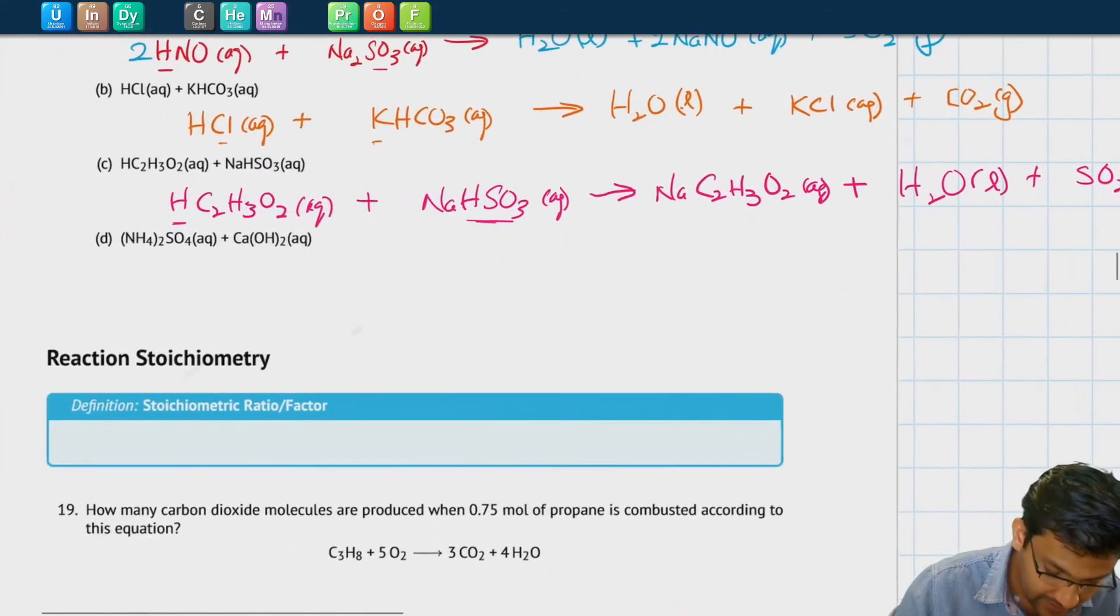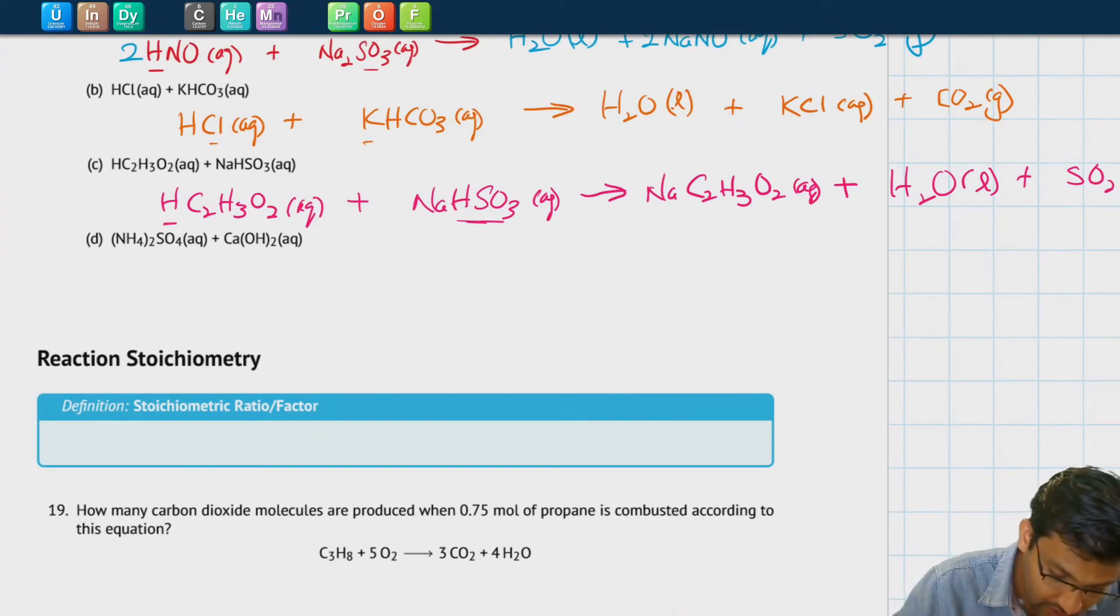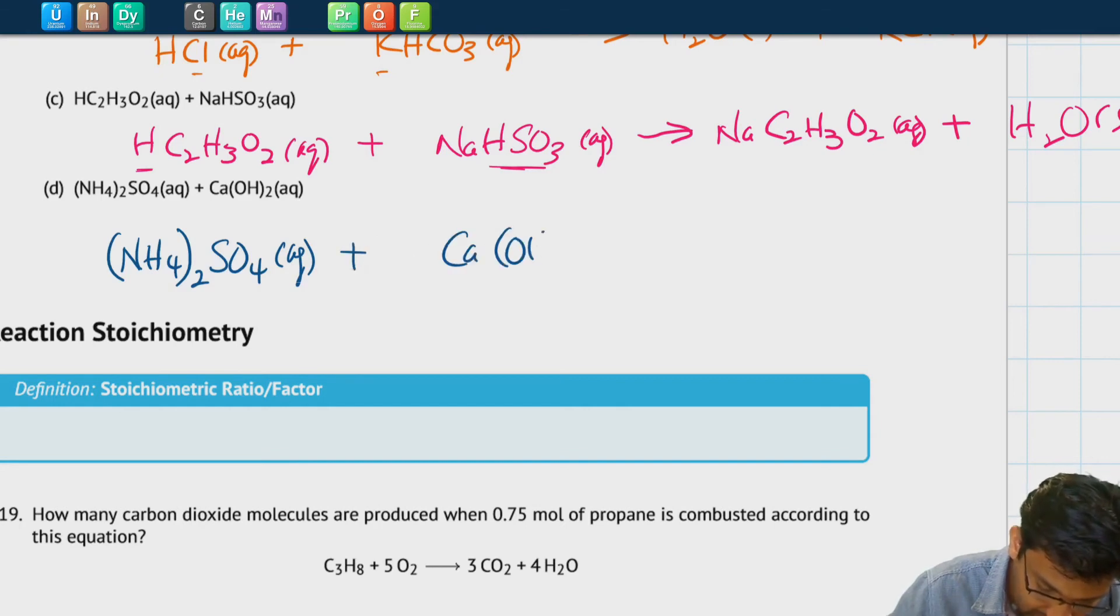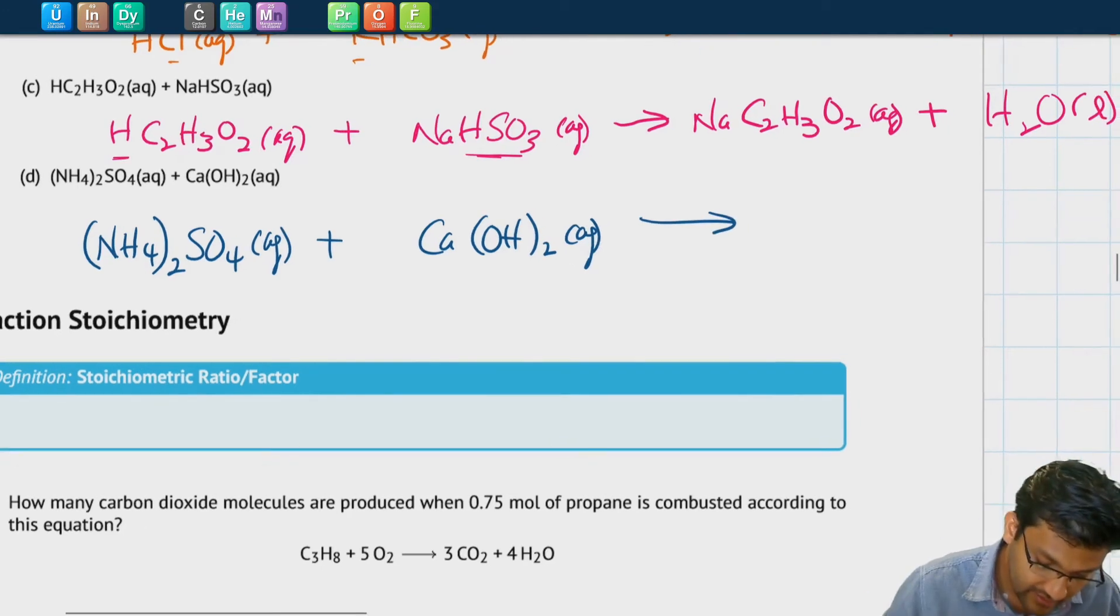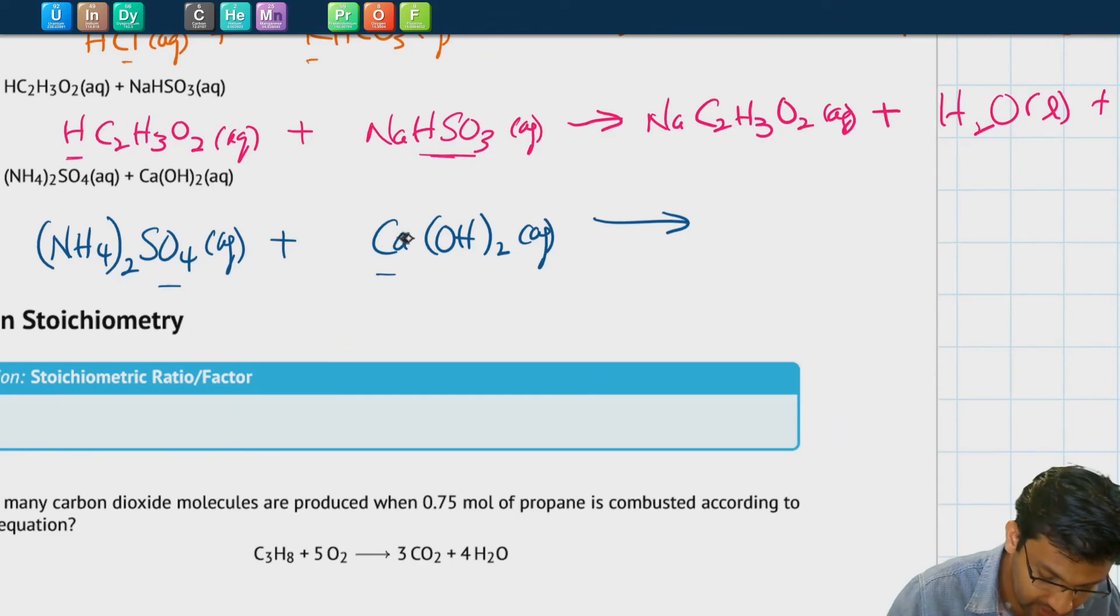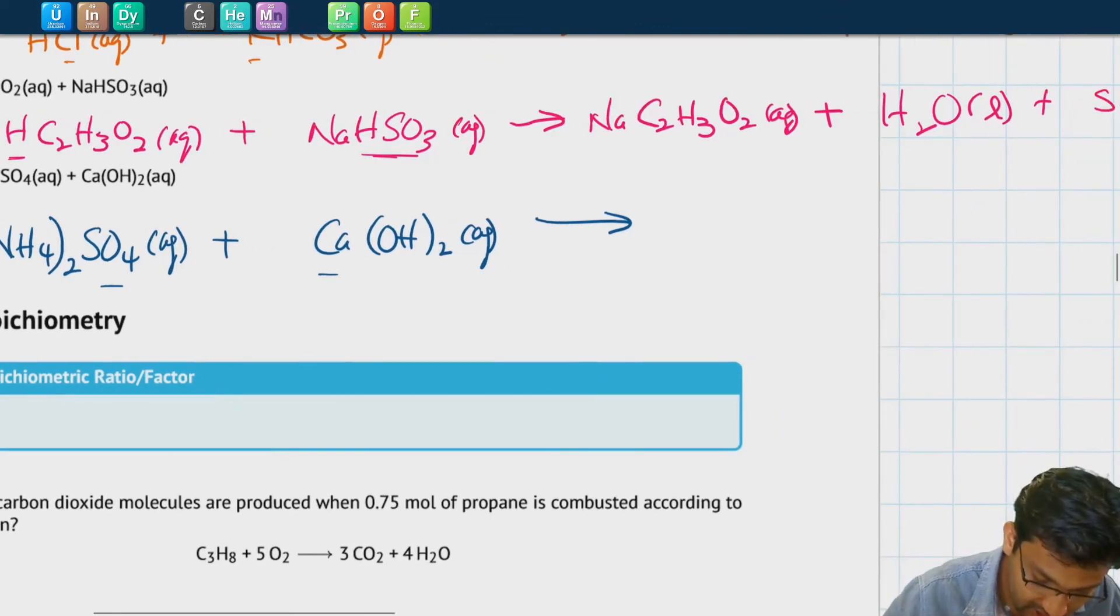And finally, let's do the third one. Here we have (NH4)2SO4 aqueous plus calcium hydroxide aqueous. Here the calcium will combine with the sulfate. Calcium has a plus 2 charge, sulfate has a 2 minus charge, so we only need one each to balance that out. So CaSO4, that's going to be aqueous.